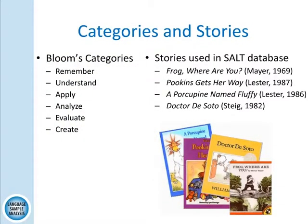What were the categories and what were the stories? In the Bloom's categories, there's remember, understand, apply, analyze, evaluate, and create. As you go through that, they get harder. And the stories are The Frog Where Are You?, Pookins Gets Her Way, A Porcupine Named Fluffy, and Dr. DeSoto.